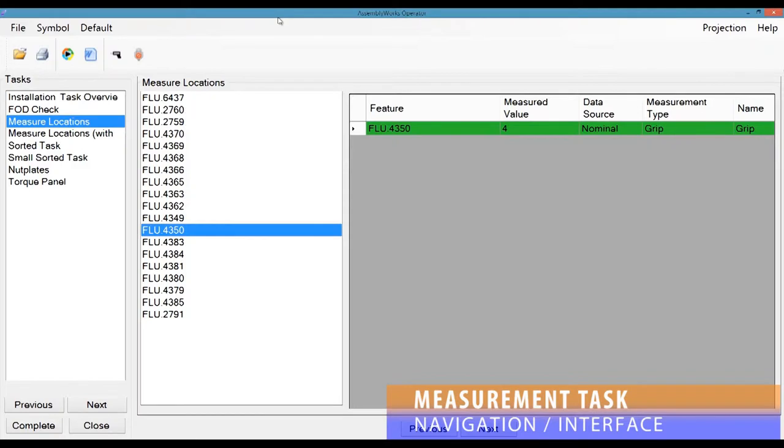Each measurement is listed by its unique location ID for easy identification and shows the measurement value, data source, and measurement type.